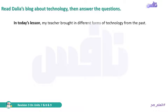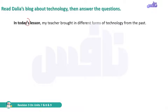In today's lesson my teacher brought in different forms of technology from the past. Note that the apostrophe 's' is used for possession. We can use it with people — for example, Sally's car. We can also use it with time, as in 'Today's lesson'. We can use it with animals, like 'the cat's tail', and with countries, like 'Egypt's economy'.